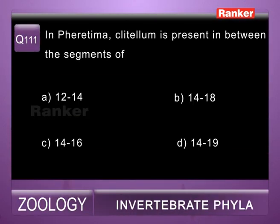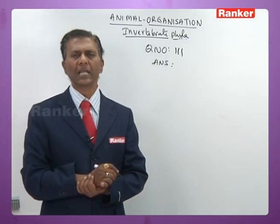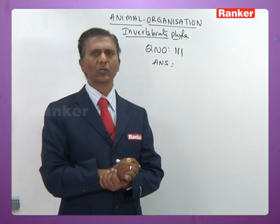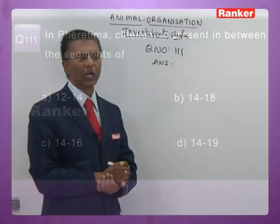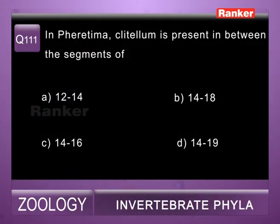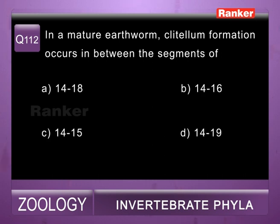Question 111: in Pheretima, clitellum is present between segments — a) 12 to 14, b) 14 to 18, c) 14 to 16, d) 14 to 19. In Pheretima posthuma, clitellum is present in segments 14, 15, and 16 (called singulum); it gives rise to cocoon during breeding season. So 111th question correct answer is c.